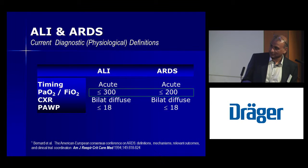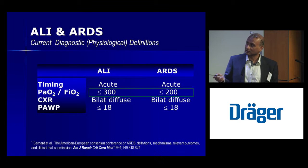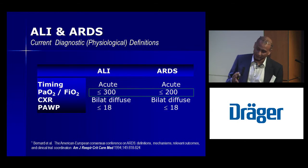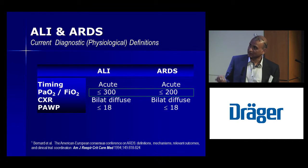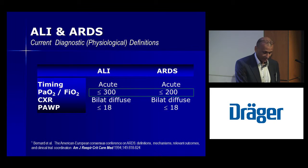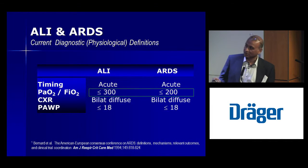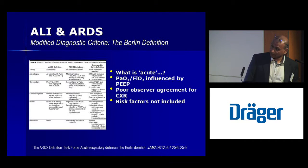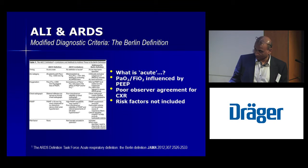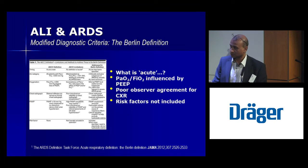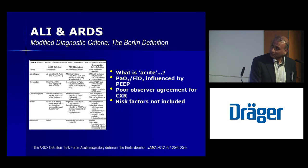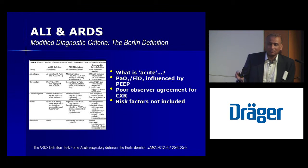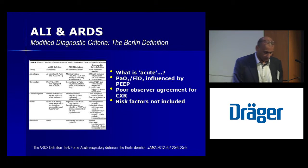In 1994, the Europeans and Americans got together and decided on some consensus criteria, making a distinction between acute lung injury and full-blown ARDS, essentially based on the PaO2/FiO2 ratio. However, even this was not perfect. The Berlin definition — which I think Luigi was involved in — was published in JAMA because many questions arose: What is meant by 'acute'? Is there a time factor? The PaO2/FiO2 ratio is crucially influenced by PEEP. And there was poor observer agreement.